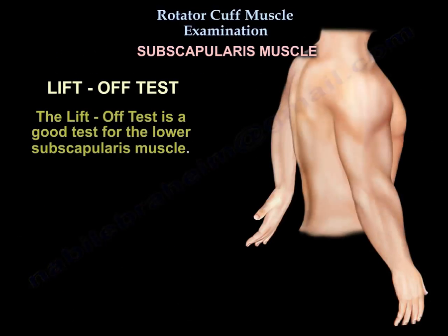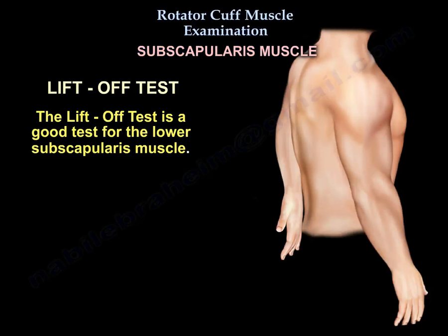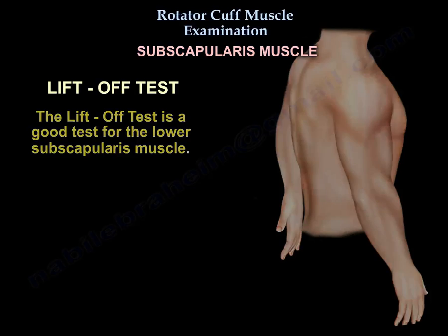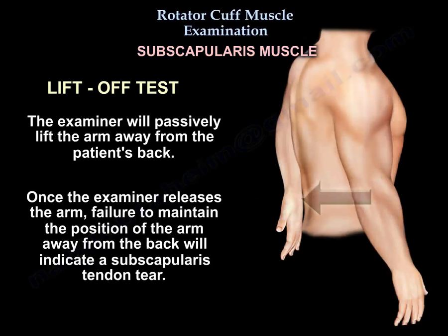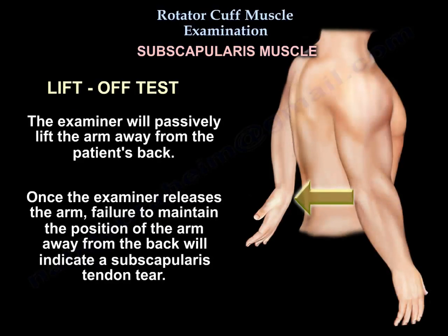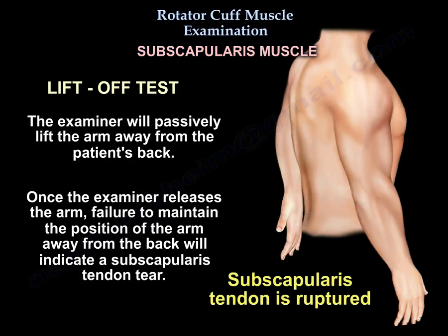The lift-off test is a good test for the lower subscapularis. The patient is standing with the affected arm internally rotated behind the back so the dorsum of the hand will be resting on the lumbar area. The examiner will passively lift the arm away from the patient's back. Once the examiner releases the arm, failure to maintain the position of the arm away from the back indicates subscapularis tendon tear.